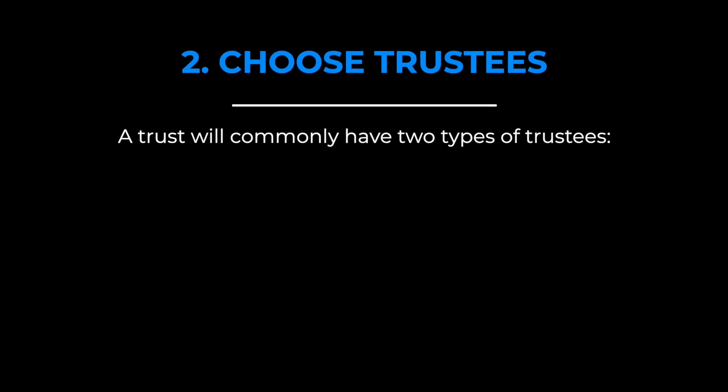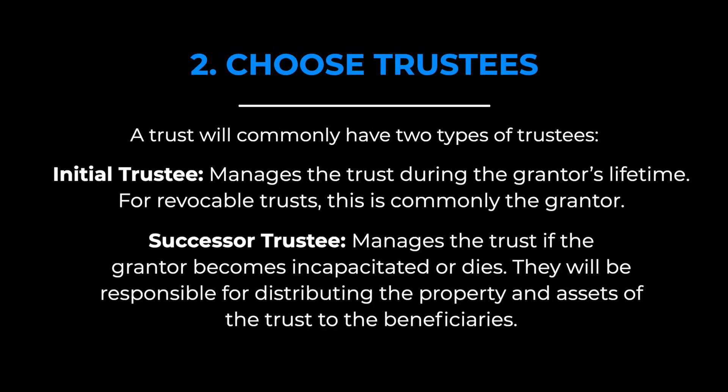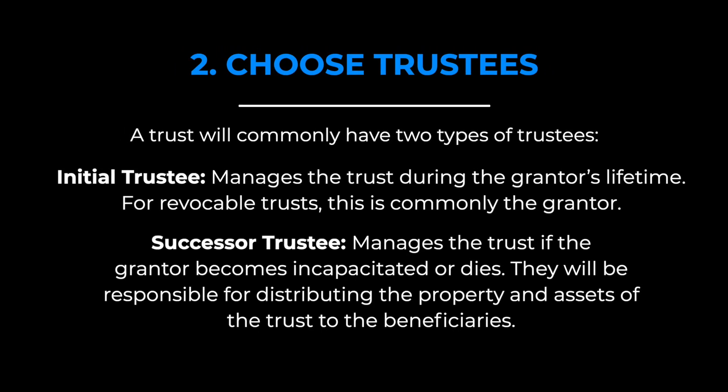Step two: choose trustees. A trust will commonly have two types of trustees. The initial trustee manages the trust during the grantor's lifetime — for a revocable trust, this is commonly the grantor. The successor trustee manages the trust if the grantor becomes incapacitated or dies, and will be responsible for distributing the property and assets of the trust to the beneficiaries.